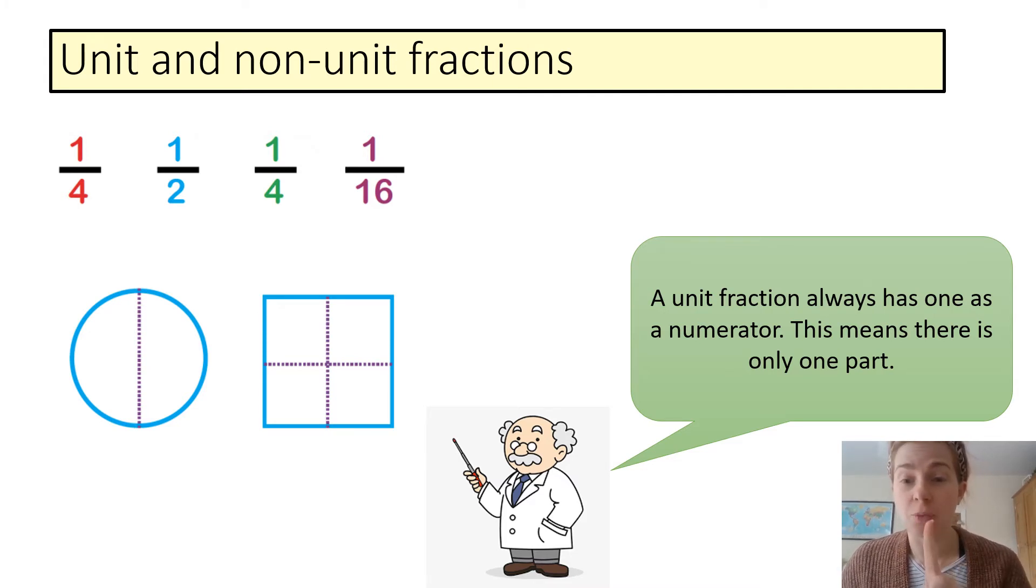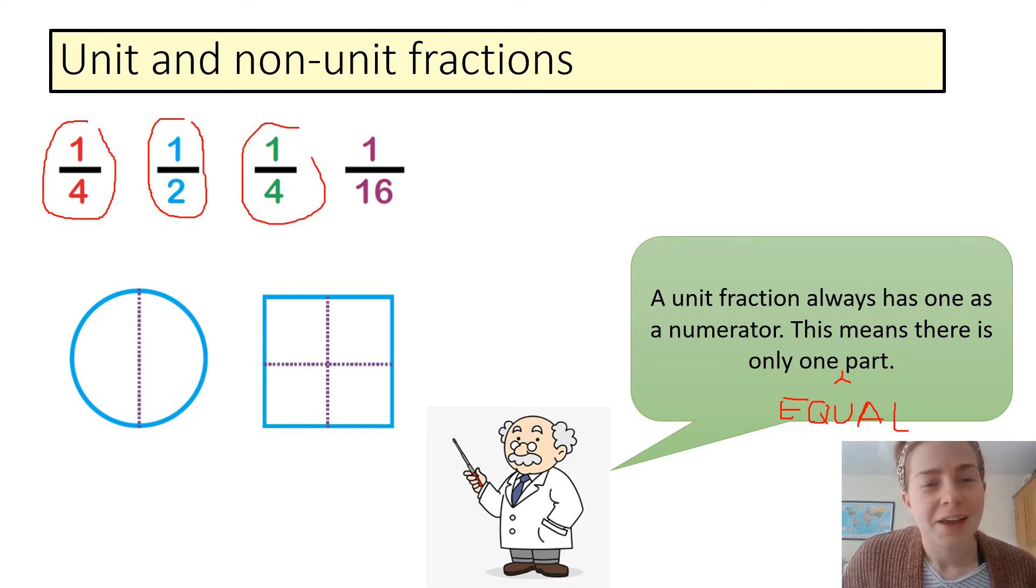This means there is only one part. We only have one part. And when we talk about parts, remember, we talk about equal parts. Only one equal part. So, we have one quarter, we have one half, we have one quarter again, and we have one sixteenth. They are all unit fractions. They all have one as a numerator, the number on top.